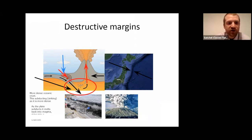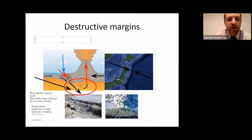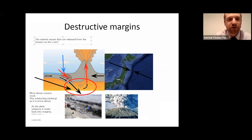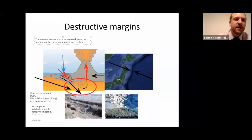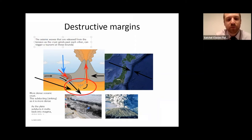As these seismic waves are released, if they happen above oceanic crust — which tends to have ocean above it — they can also trigger a tsunami. The seismic waves are released from the tension as the crust grinds past each other. You have to imagine the quantity of rock — about 10 kilometres thick if not more — grinding together. This can trigger a tsunami at these boundaries.